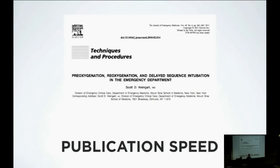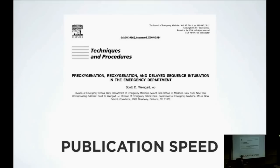Now a more recent story. This is a paper called 'Pre-oxygenation, Re-oxygenation and Delayed Sequence Intubation in the Emergency Department.' Scott Weingart, an emergency physician and critical care physician at Mount Sinai, comes up with this idea that hypoxic patients shouldn't just be quickly RSI'd. Hypoxia is a bad outcome for already hypoxic patients — they'll have an anoxic brain injury. So how can we pre-oxygenate them better? They're frequently combative and agitated.